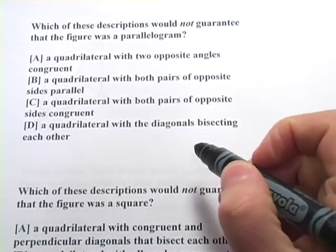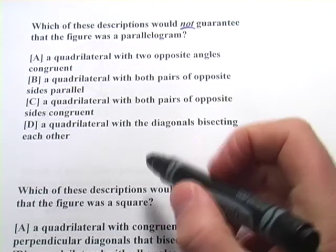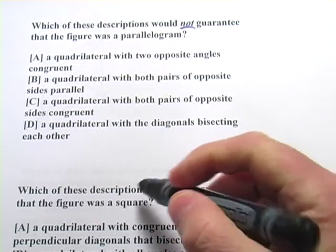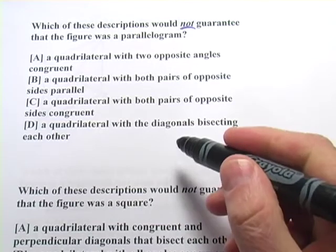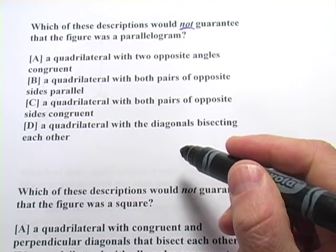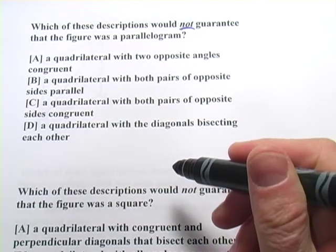This next one says, which of these descriptions would not guarantee the figure was a parallelogram? So, three of these are going to guarantee it's a parallelogram. One of them, the one that we're looking for, is not going to guarantee it.